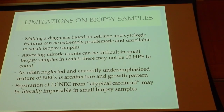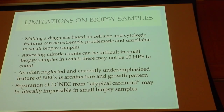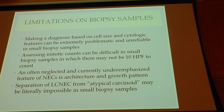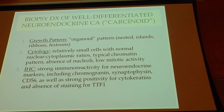There are also limitations in assigning a diagnosis on small biopsy samples. Making a diagnosis based on cell size and cytologic features can be extremely problematic and unreliable on a tiny biopsy. You may not have ten high-powered fields available to count. If the WHO requires 0 to 2, 2 to 10, or more than 10 mitoses to separate categories, and you can't count ten high-powered fields, you have a real problem. Architecture and growth pattern have been underemphasized, and separating large cell neuroendocrine carcinoma from atypical carcinoid on small biopsies can be very difficult if not impossible.